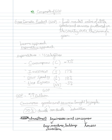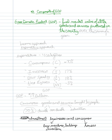So now what I want to do is look at the components of GDP. To do that we first need to define what it is. Gross domestic product, or GDP, is the final market value of all the goods and services produced in the country over the course of a year.